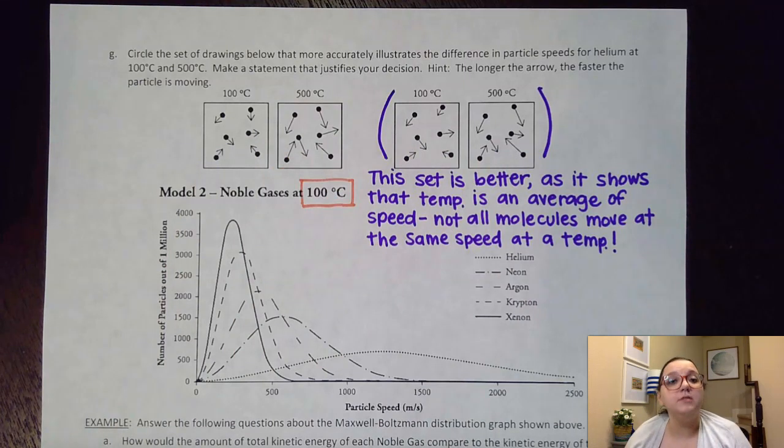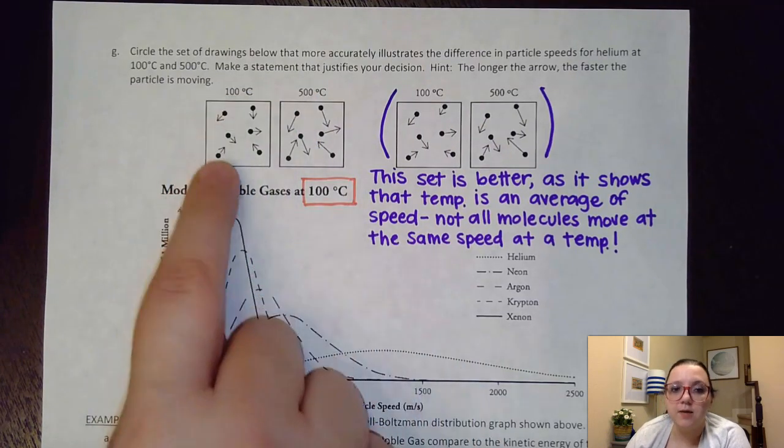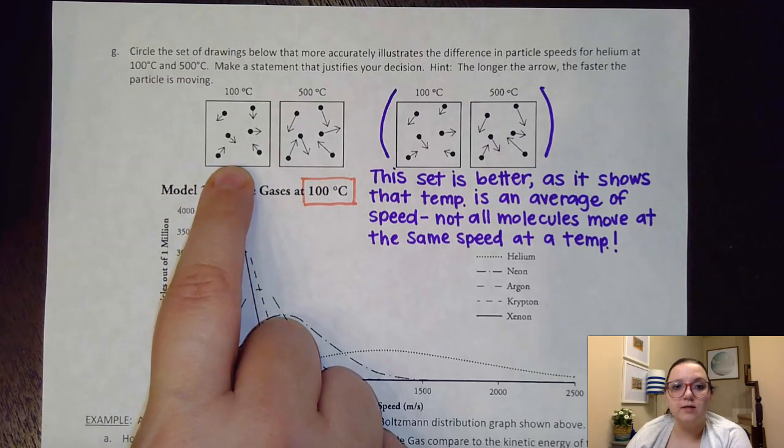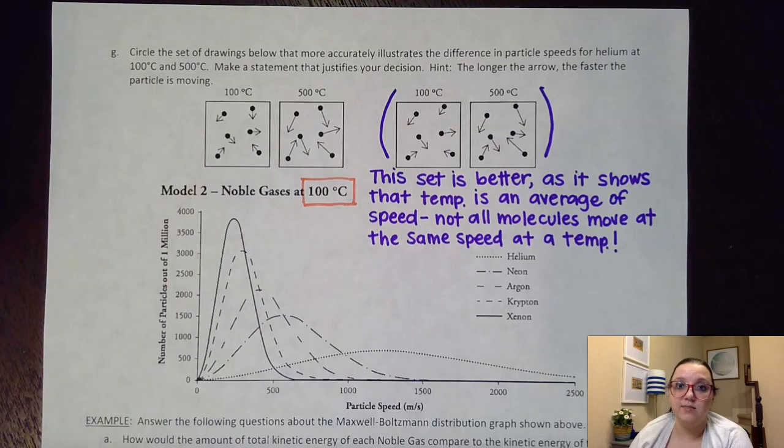Now for both of these situations I see that I have shorter arrows at 100 and longer arrows at 500. Okay so there must be some other difference between these two images. And if I look more carefully at this first one I notice that at a particular temperature all of the arrows are exactly the same length which would indicate that all of the speeds are exactly the same at that temperature.